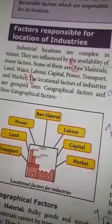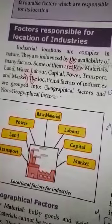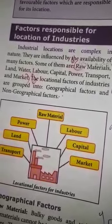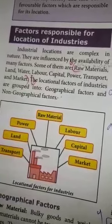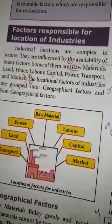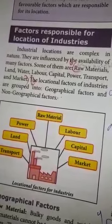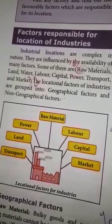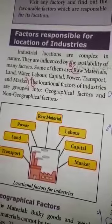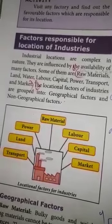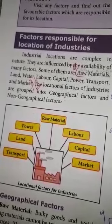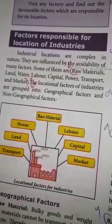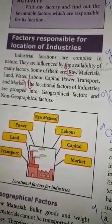We study about factors responsible for the location of industries. Industrial locations are complex in nature and are influenced by the availability of many factors. Some of them are raw materials, land, water, labor, capital, power, transport and market. The locational factors of industries are grouped into Geographical Factors and Non-Geographical Factors.